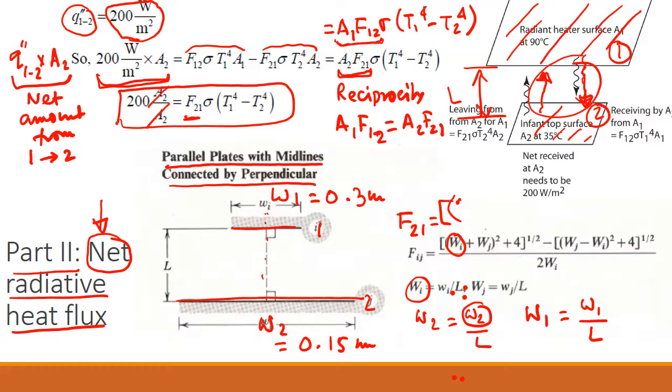I can write F21 as equal to, you can notice this is in terms of IJ. So if it is IJ, then this is I. For F21, it will be W2 over L plus W1 over L square plus 4, and so on. When you plug everything in, W1 is known, W2 is known, the only unknown in F is going to be L.